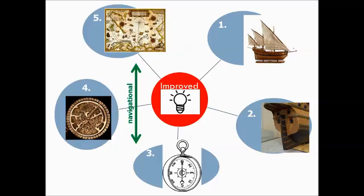The improved technology includes: number one, the ship called the Caravel — top right corner — which could sail closer to shore and had triangular sails so it could sail into the wind. Number two, the invention of the rudder so you could steer your ships. Number three, learning of the compass from China, one of the four great inventions of China. Number four, the astrolabe from Islamic Arab traders, which allows you to use the stars to find your latitude north or south of the equator. Number five, the improvement of maps. Numbers three, four, and five are all navigational devices.